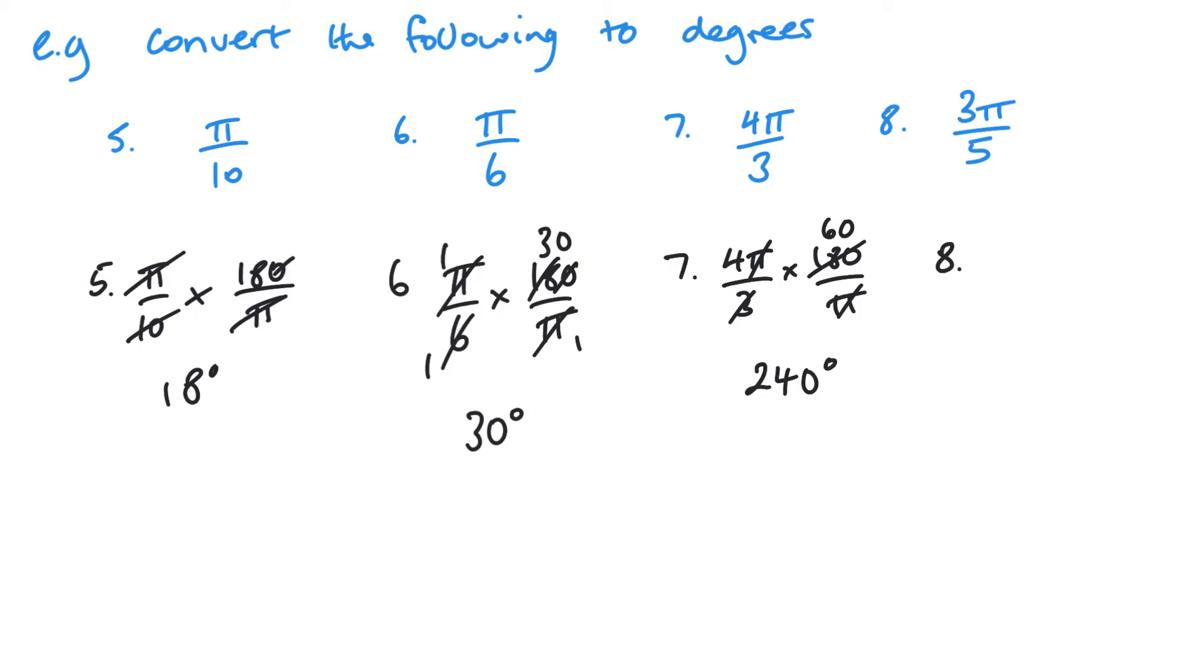And then finally, 3 pi over 5 times 180 over pi. Pi's are canceling. 5 goes into 180 36 times. So we've got 3 times, so we've got 3 times 36 there, which is 108.